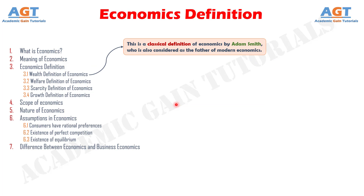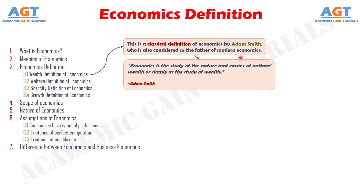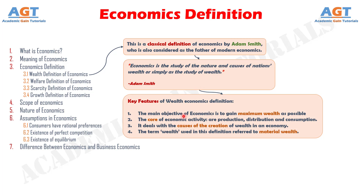First, the wealth definition of economics. This is a classical definition of economics by Adam Smith, who is also considered as the father of modern economics. According to Adam Smith, economics is the study of the nature and causes of nations' wealth, or simply as the study of wealth. The key features are: the main objective of economics is to gain maximum wealth, the core of economic activity are production, distribution and consumption, it deals with the causes of the creation of wealth in an economy, and the term wealth refers to material wealth.